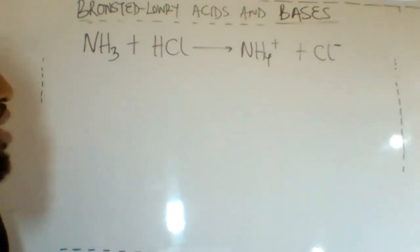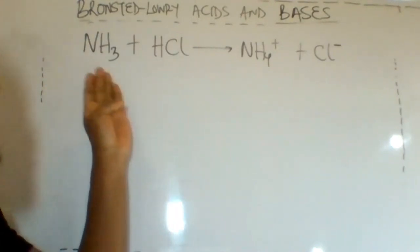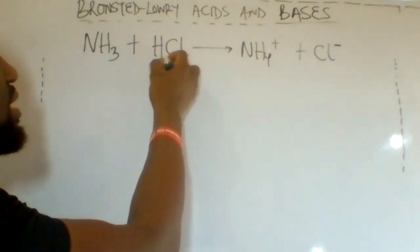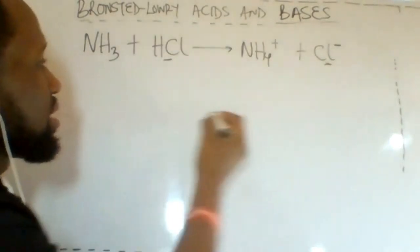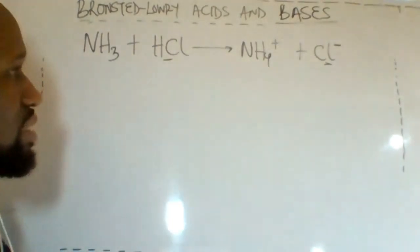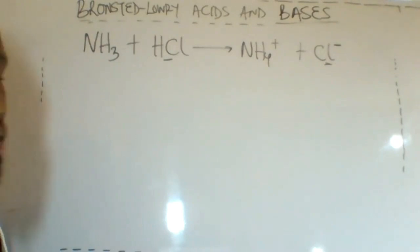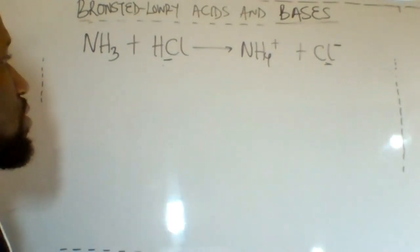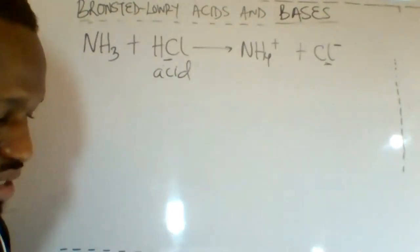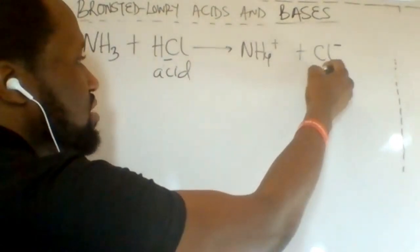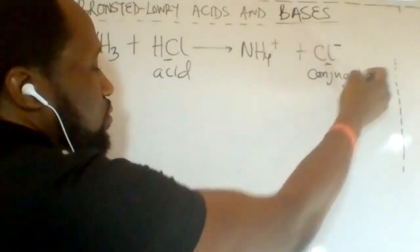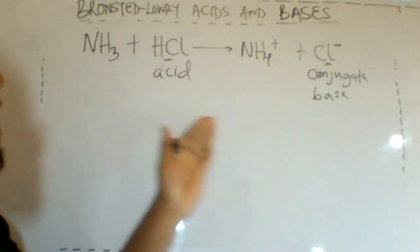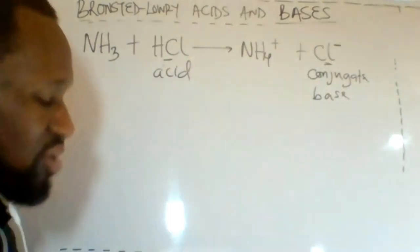Our final example to show the Brønsted-Lowry acid is the reaction between NH₃ and HCl, which forms NH₄⁺ and Cl⁻. HCl became Cl⁻, meaning it lost a proton. A substance that donates a proton is known as an acid, so HCl is the Brønsted-Lowry acid. By becoming Cl⁻, that product is the conjugate base. The product formed after donating a proton is known as a conjugate base.